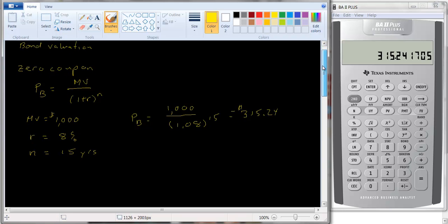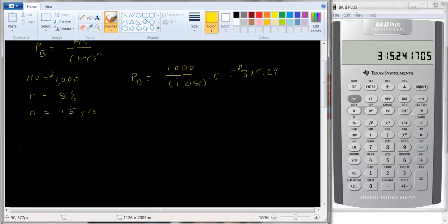Now let's look at the more complicated case where we have a coupon bond. In the case of the coupon bond, you have these interest payments, which we said are called coupons. So one term we use is something called the coupon rate. The coupon rate is the percentage of the maturity value that you receive in interest.